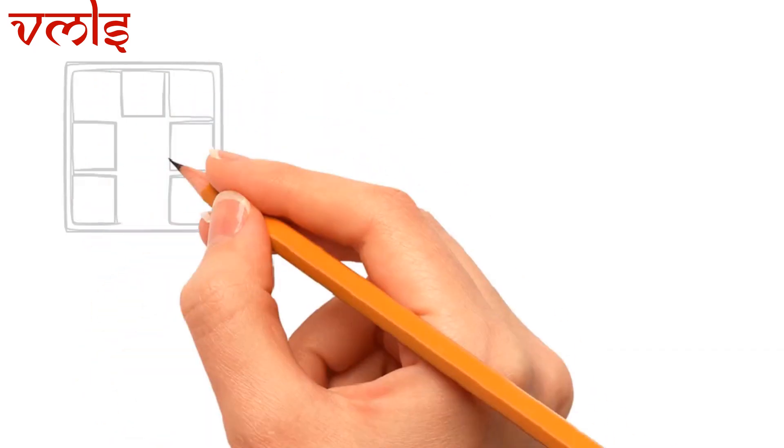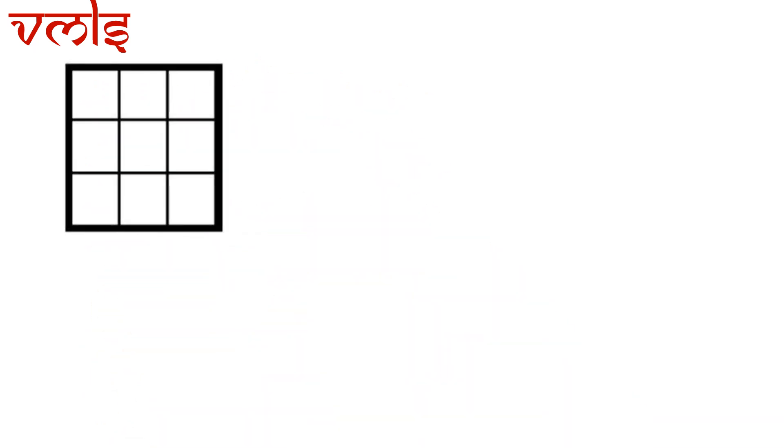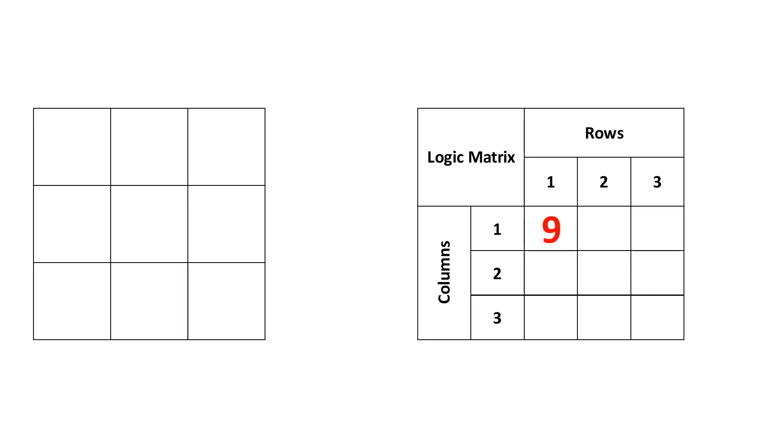Now going further, if it is a 3 by 3 square matrix, how would we calculate this? So let's go ahead with the simplest form of understanding. When we have a 3 by 3 square matrix, we will have this logic matrix. Just try to observe the logic matrix.